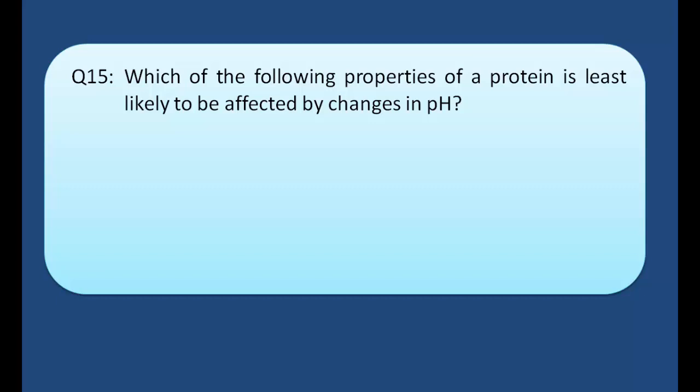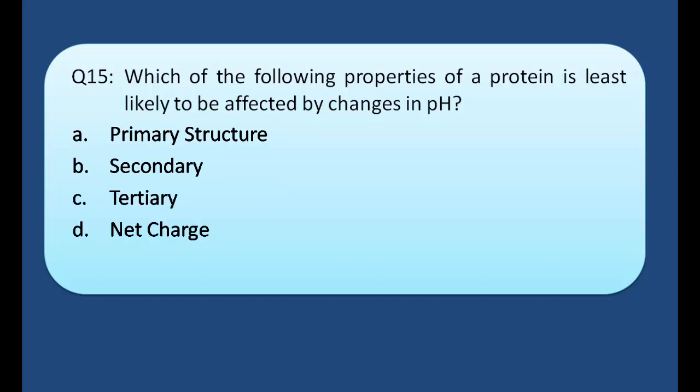Q15: Which of the following properties of a protein is least likely to be affected by changes in pH? a) Primary structure, b) Secondary, c) Tertiary, d) Net charge. Answer: a) Primary structure. Primary structure is the amino acid sequence of a protein linked by peptide bonds. Change in pH cannot alter the amino acid sequence and it cannot break peptide bonds. If pH changes, it does not affect the primary structure of proteins because amino acids are joined by peptide bonds, and changing pH has no effect on these bonds. Therefore the answer is a) primary structure.